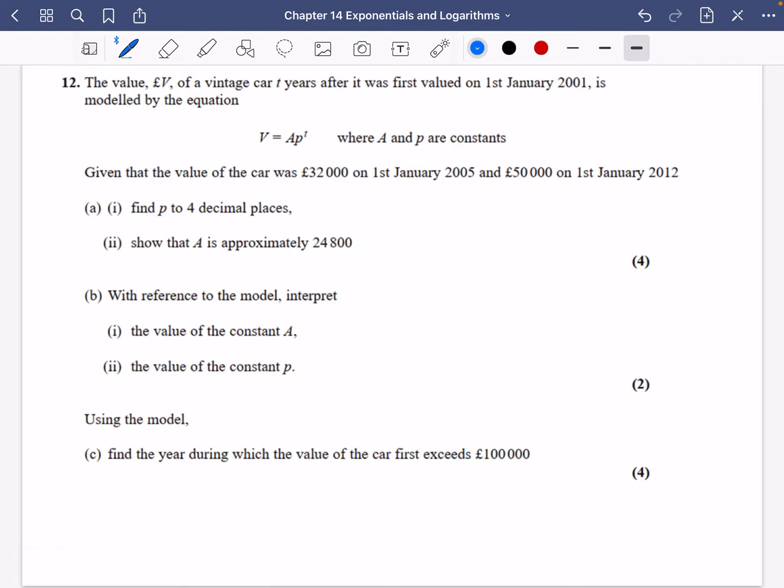It says the value V pounds of a vintage car t years after January 1st, 2001 is modeled by V = AP^t, where A and P are constants. Given that the value was £32,000 on January 1st, 2005—if 2001 is t=0, this is four years later—and the value is £50,000 when t=11, we need to find P and A. I'll take these two pieces of information and substitute them in. So 32,000 = AP^4 and 50,000 = AP^11.